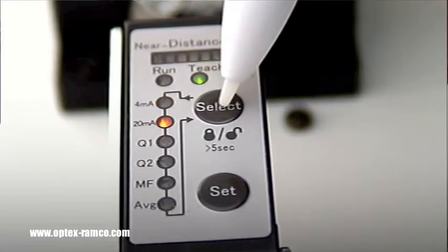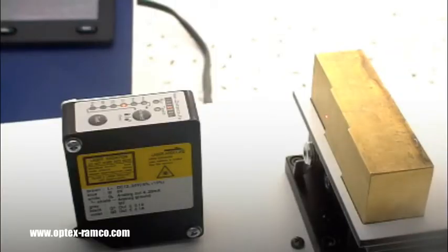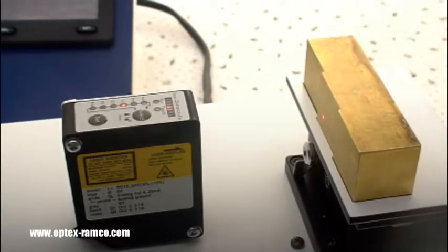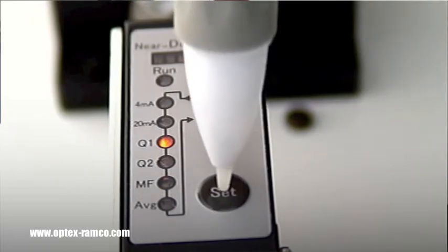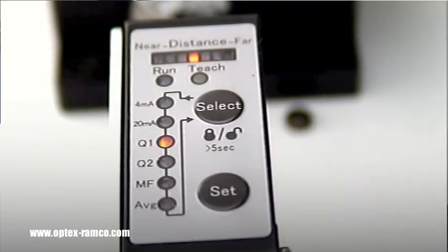Press the select button a couple of times until you get down to Q1, that's the first output. Move the target to where you want the output to change state and press the SET button.